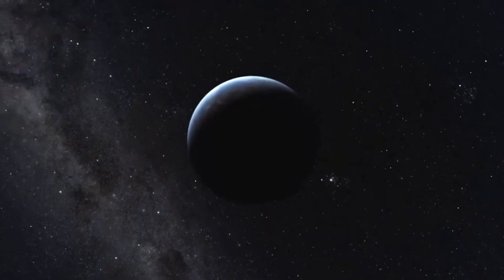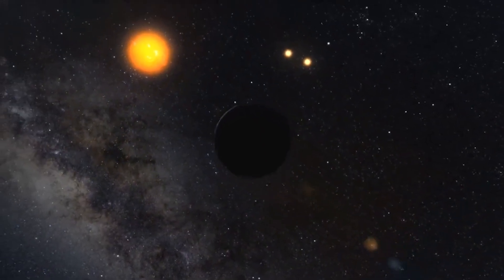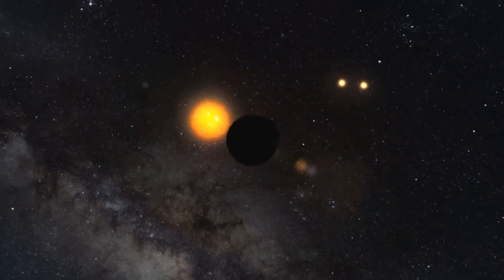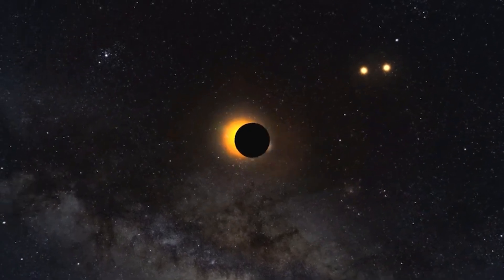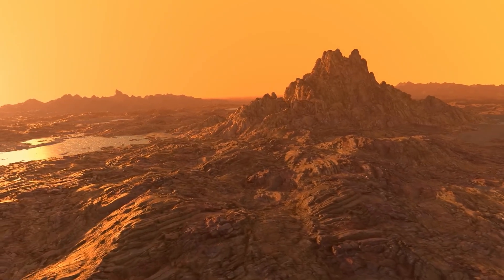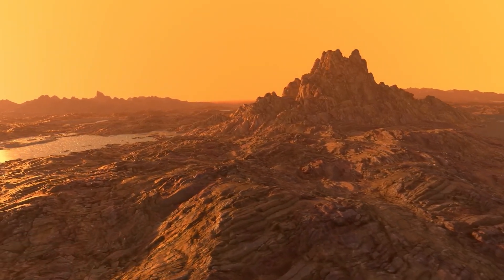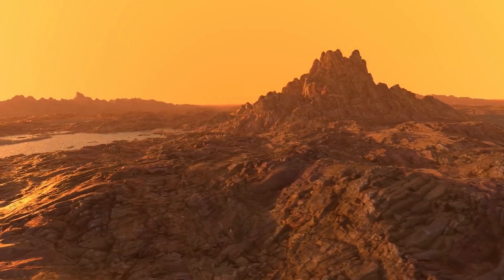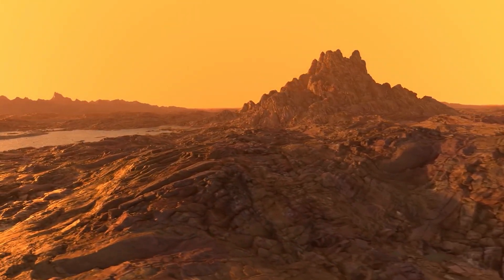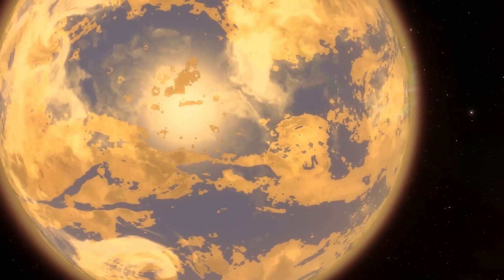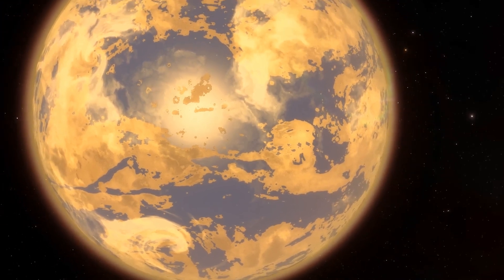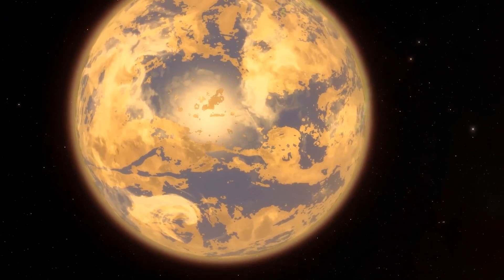On closer examination, Proxima b turns out to be very similar to Earth, with a radius 1.1 times that of Earth and a mass 1.3 times that of Earth, indicating that it is a rocky world with an equivalent density. However, there are significant differences.